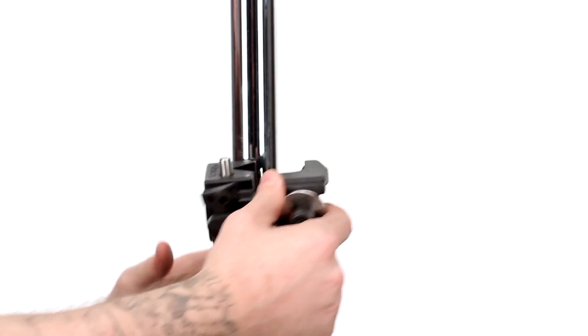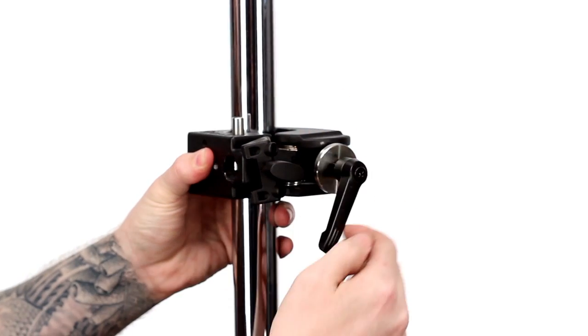Let's rig a scrim in front of a 1K Fresnel on the same stand that's supporting the light fixture. First, we'll place a clamp around the riser section of your light stand.